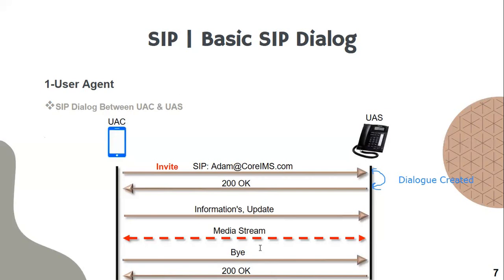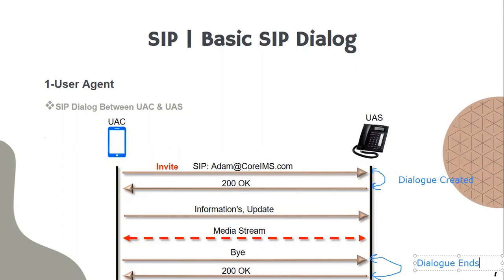So you did the setup of your session, then the media stream, then any modification, and at the end you want to tear down the session. To tear down, one user will send a BYE message, which means he is closing the call. The other end replies with 200 OK. So as shown here, a dialogue is created at the start and torn down at the end with BYE. This is how we initiated the call — and now we understand the SIP dialogue in general.